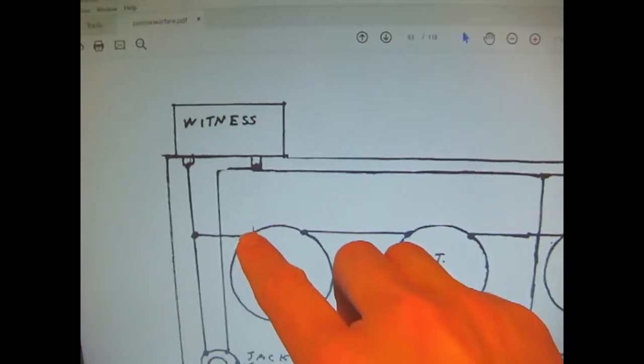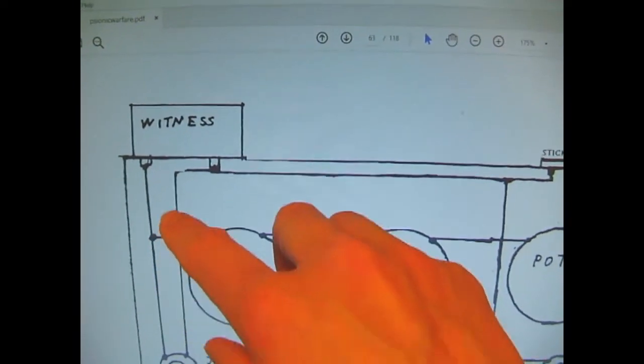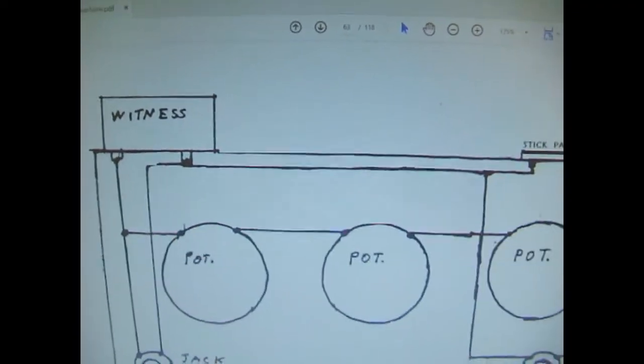As you can see, he's made a dot where there is a connection, where you solder, and he's just drawn a line straight through where there is no connection.